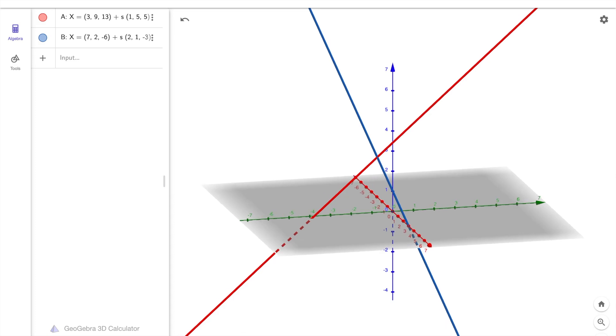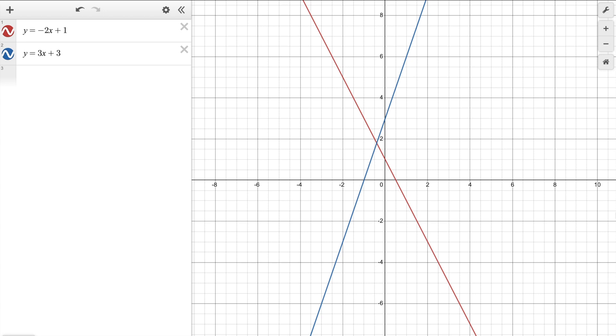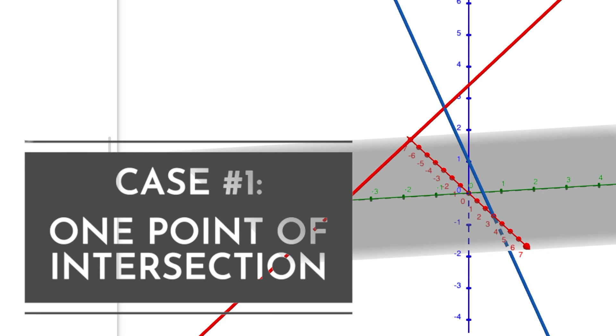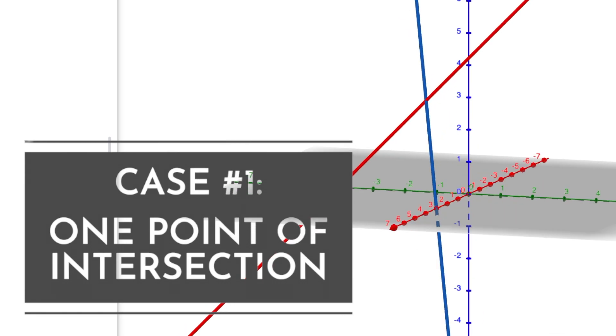you can see that these two lines intersect right here at this single point, just like in two dimensions where these two lines intersect at this point. So case number one: two lines in three dimensions can intersect at one single point.